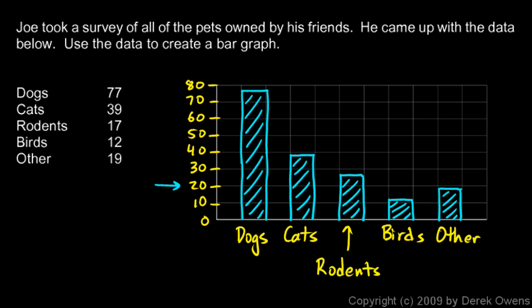And so there we have it — a bar graph displaying this given data. Now we can look at this graph and easily compare. Visually, it's easy to see that there are a lot more dogs than anything else, and that cats come in second. You can see how much of one there is compared to the other very easily, and you can get that information into your head just a lot more quickly than you can by looking at the numbers.